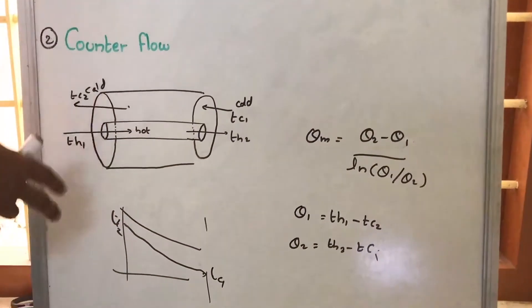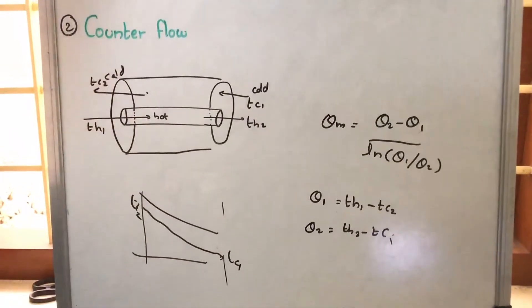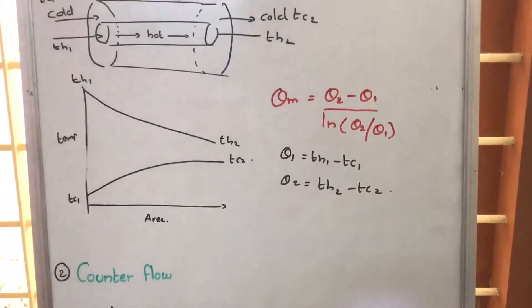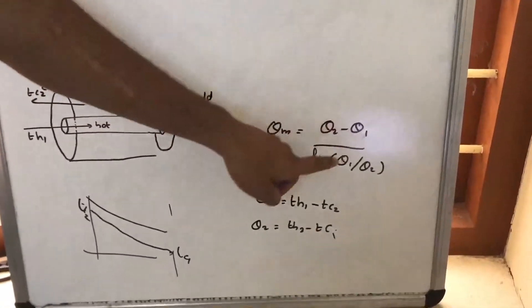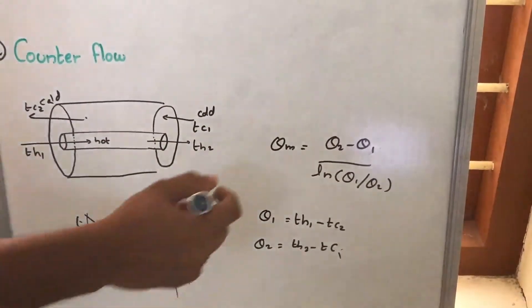So if we are drawing this temperature diagram, here it will be like this. So in the temperature diagram there is a difference, and theta m is given by the same formula: theta 2 minus theta 1 by log theta 2 by theta 1.